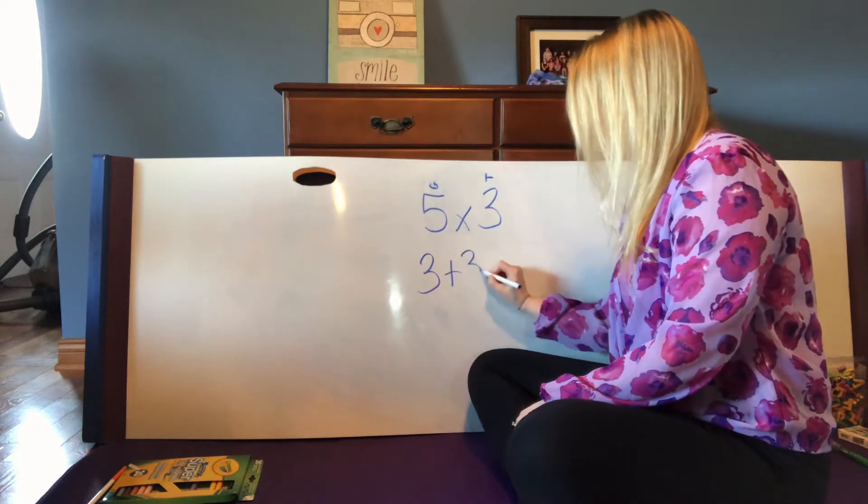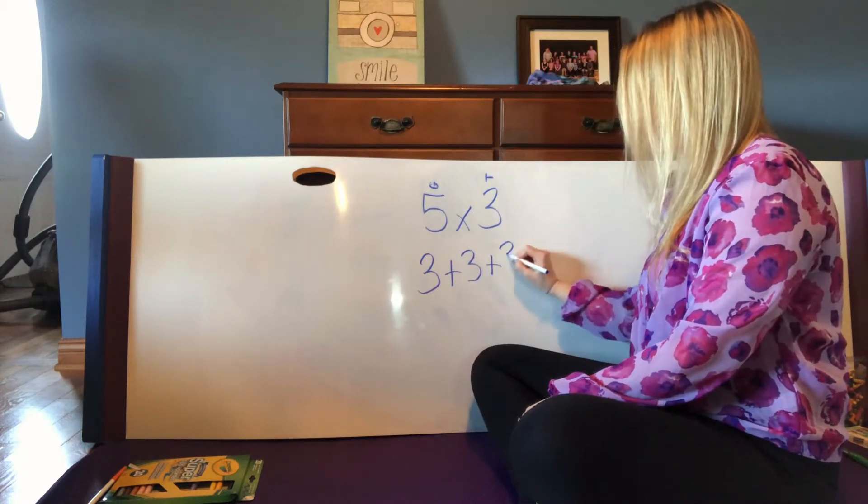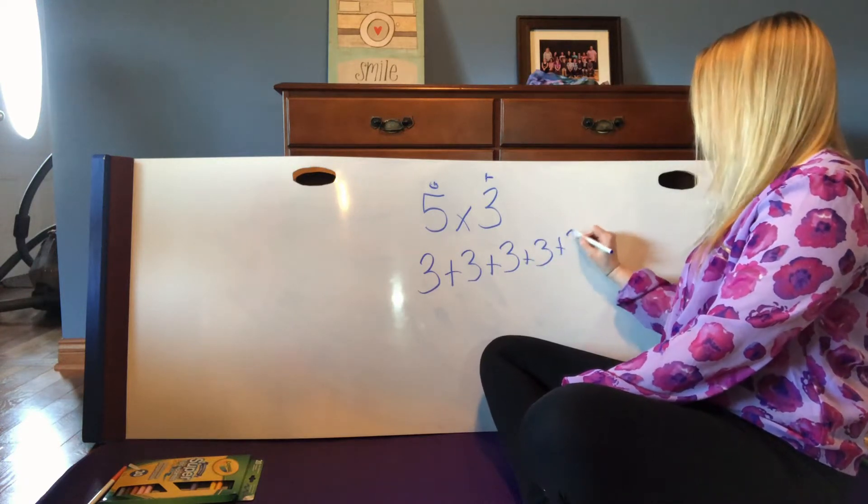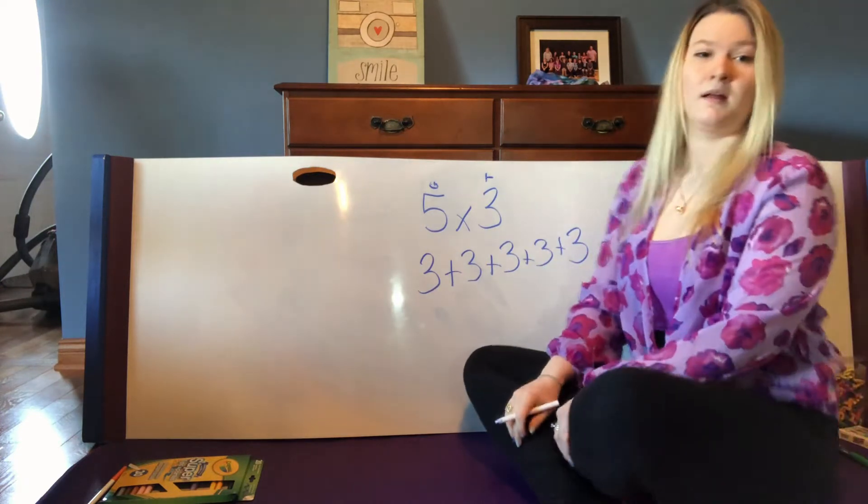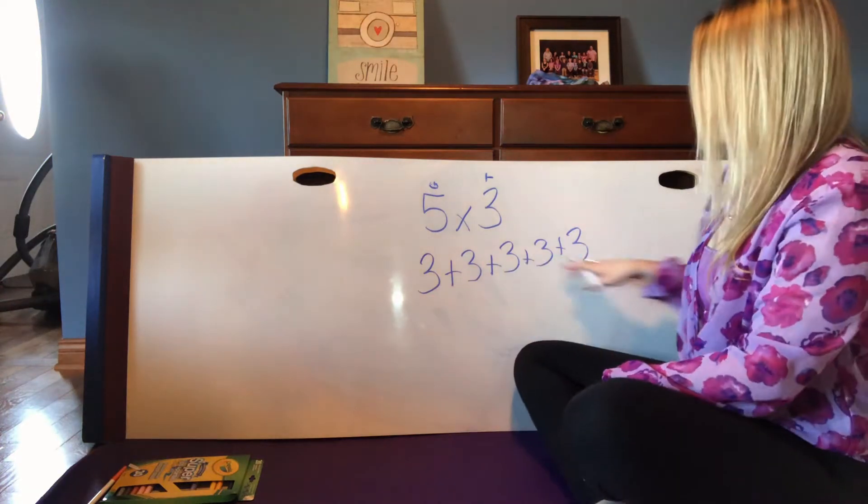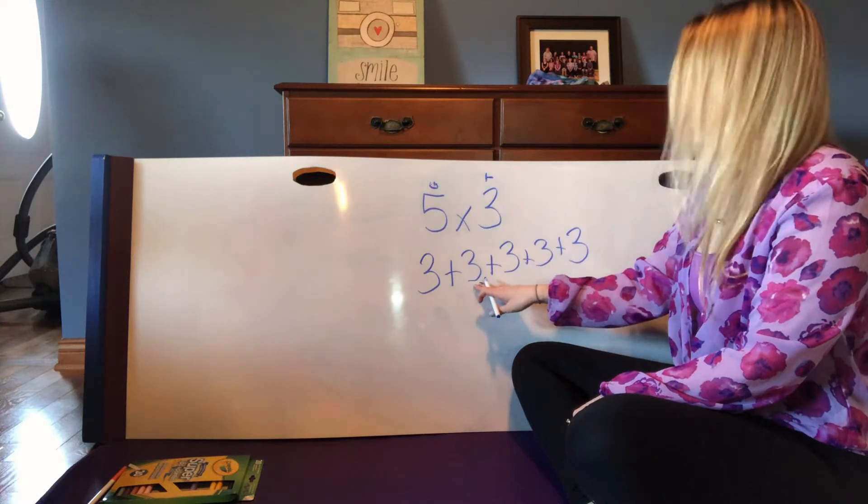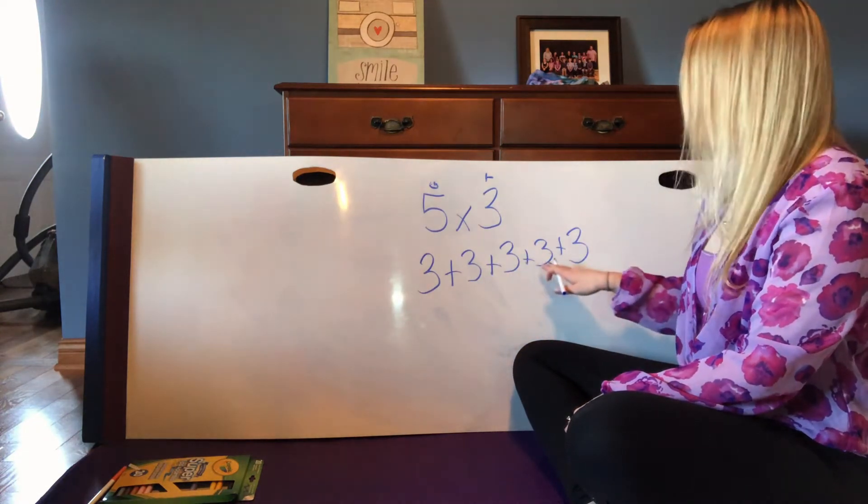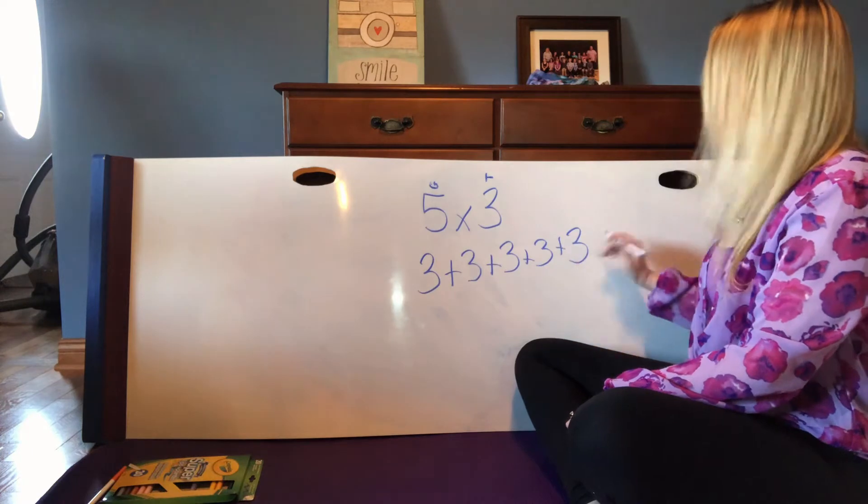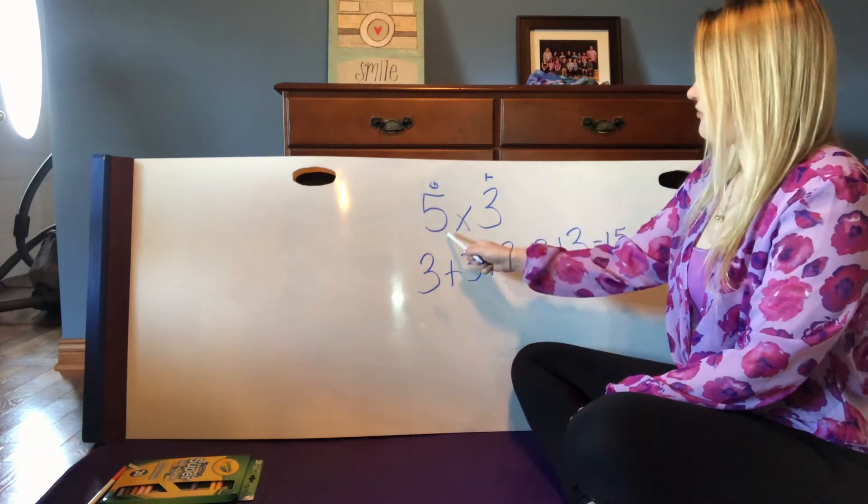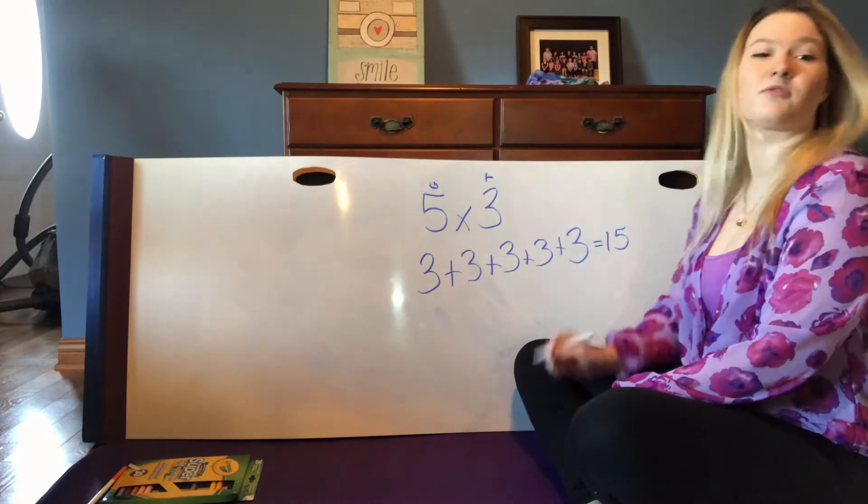1, 2, 3, 4, 5. Then I just have to do my addition to get my answer. So 3 plus 3 is 6, plus another 3 is 9, plus another 3 is 12, and another 3 is 15. So we get our answer. 5 groups of 3 things.